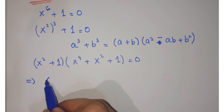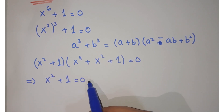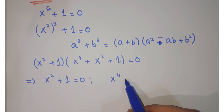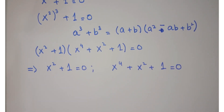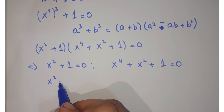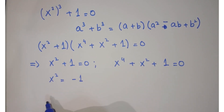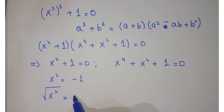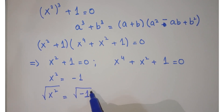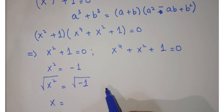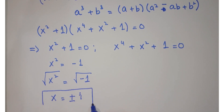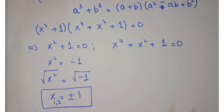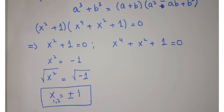This implies x squared plus 1 equals 0, and x to the power 4 minus x squared plus 1 equals 0. From the first equation, x squared equals minus 1, and taking square root on both sides, we get x equals plus or minus iota. These are the first and second solutions of x from this equation.